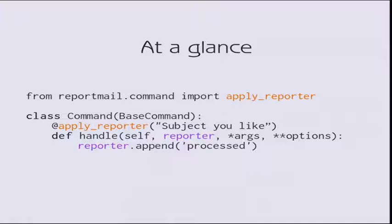This is the Django management command. You need to import the apply_report decorator and apply it to the handle method. The handle method takes a reporter object as a second argument, and you can use the interface like a list — you can append strings you want to report. This is a very simple example.